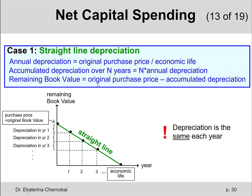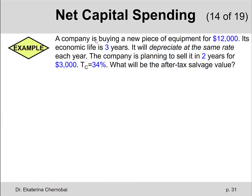So if the economic life is ten years, then after three years, there's seven years' worth of value remaining. Now let's look at the following example: a company is buying a new piece of equipment for $12,000. Its economic life is three years, it depreciates at the same rate each year, and the company plans to sell it in two years for $3,000. The corporate income tax rate TC equals 34%. What will be the after-tax salvage value?